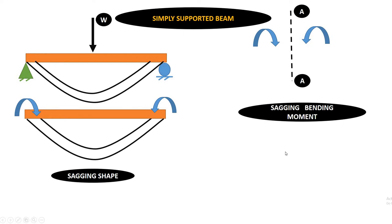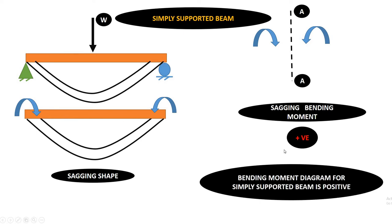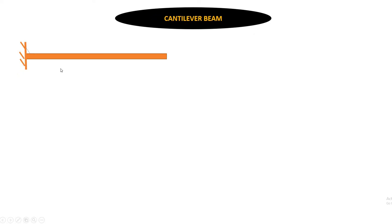For sagging bending moment, the sign is positive. So for a simply supported beam, the bending moment diagram is positive, but remember the loading should be downwards. Next, let us consider the cantilever beam.